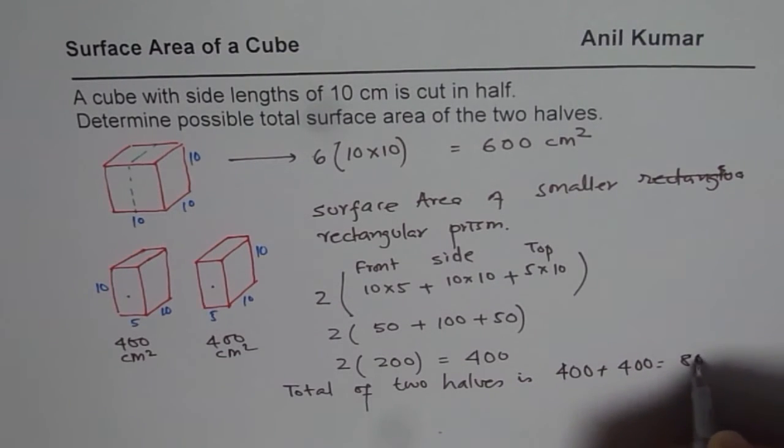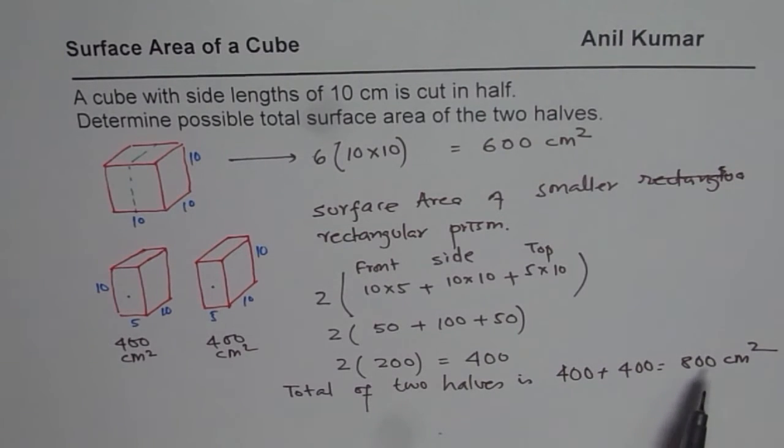That is 800 cm square. Now you can see it is much more than the starting one. So initially we had just 600 cm square of surface area, now we have 800 cm square.